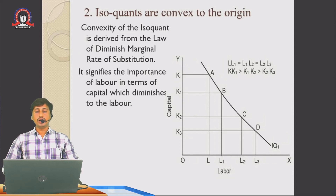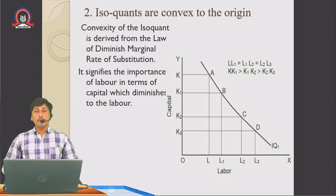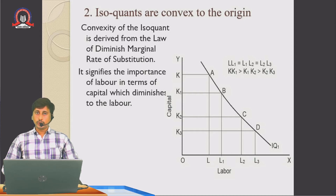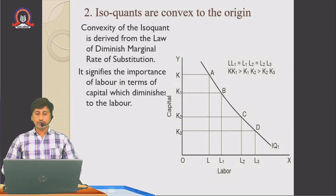The isoquant curve is convex to the origin. Curves can have two shapes: convexity and concavity. When applying marginal returns to scale we derive a convex curve, whereas when applying DMRTS — diminishing marginal rate of technical substitution — we obtain a concave curve. The isoquant does not have concavity; it has a convex curve, signifying the importance of labor.